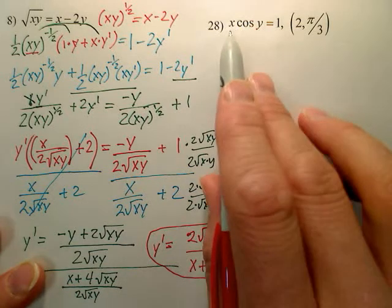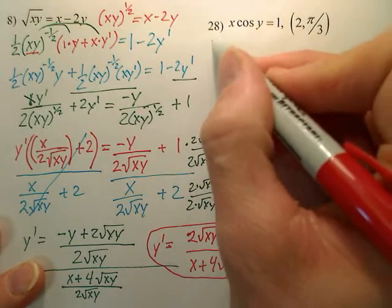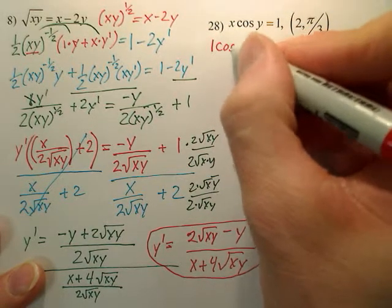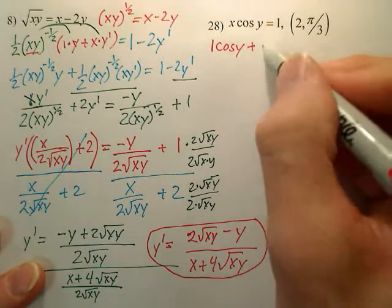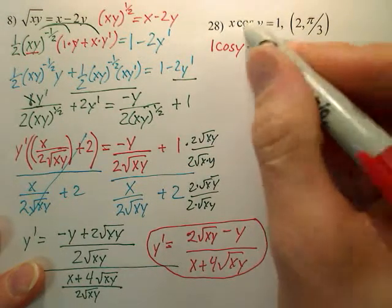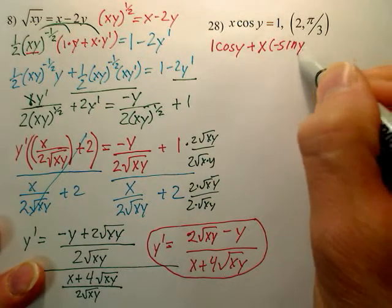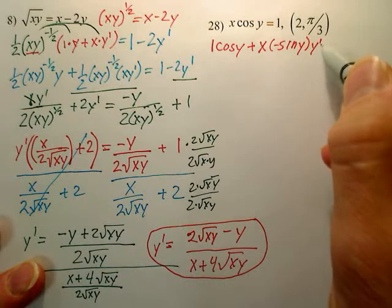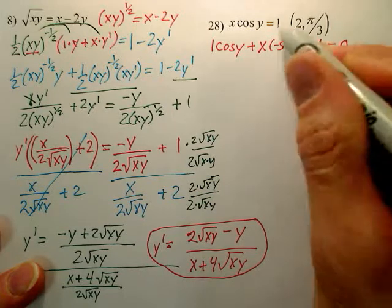This is a product rule. So the derivative of x is 1, and then you leave cosine y plus, leave x, and we need to derive cosine, that's negative sine y, but don't forget the derivative of y is y prime. A lot of people forget that y prime right there. Equals the derivative of 1 is 0.